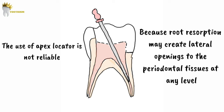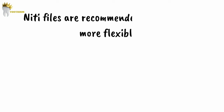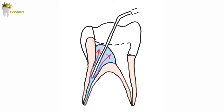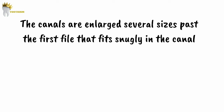After establishing the working length, the canal is cleaned and gently shaped with only a minimal amount of shaping required. The use of Gates Glidden or Peeso drills is contraindicated because of the danger of perforation or stripping of the roots. Nickel-titanium instruments are recommended over stainless steel ones due to their greater flexibility. If stainless steel files are used, they must be gently pre-curved to help negotiate the canals. During the cleaning phase, we should irrigate with sodium hypochlorite or chlorhexidine digluconate solution, as many pulpal ramifications cannot be reached mechanically. The canals are enlarged several sizes past the first file that fits snugly in the canal, with a minimum size of 30.